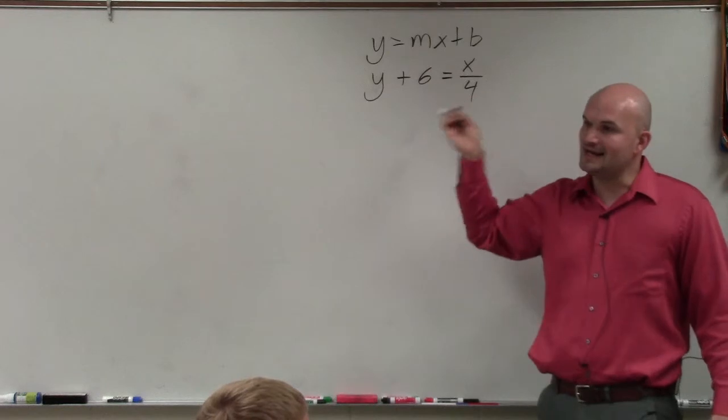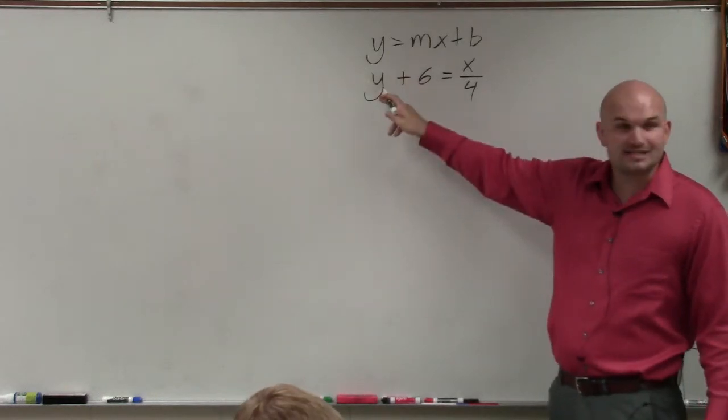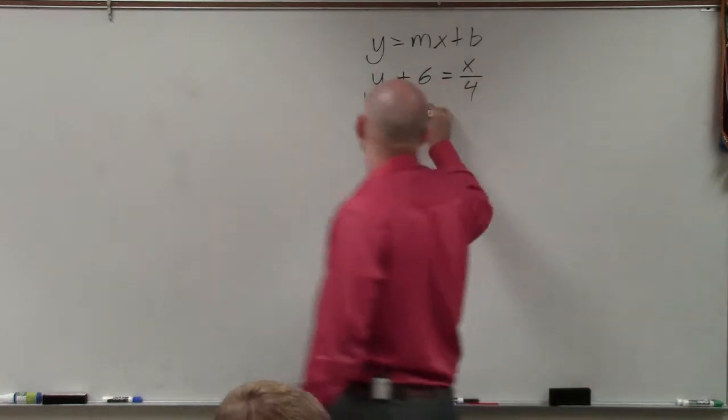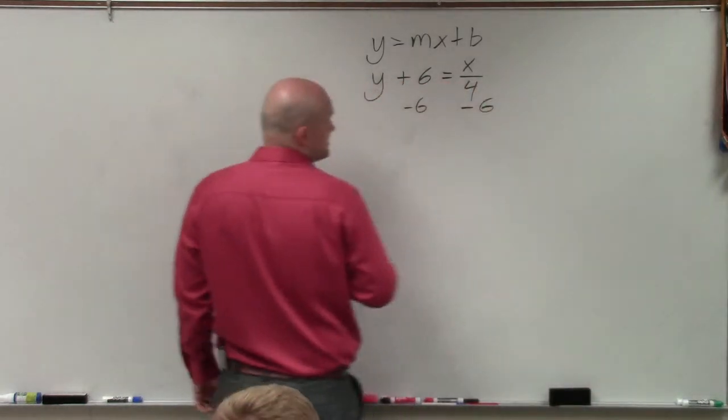So basically, in this one, again, the slope-intercept equation has the y isolated. So we see the y. We see that our y is being added by 6. So to isolate it, I will subtract a 6 on both sides.